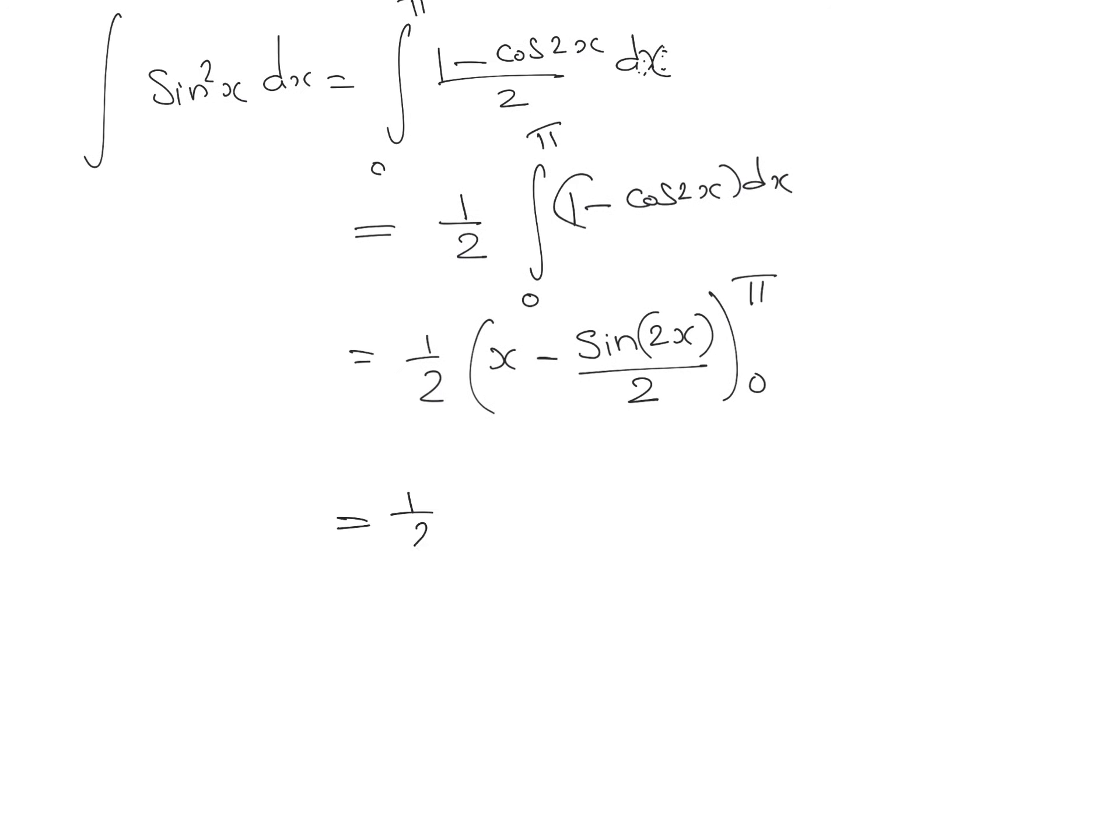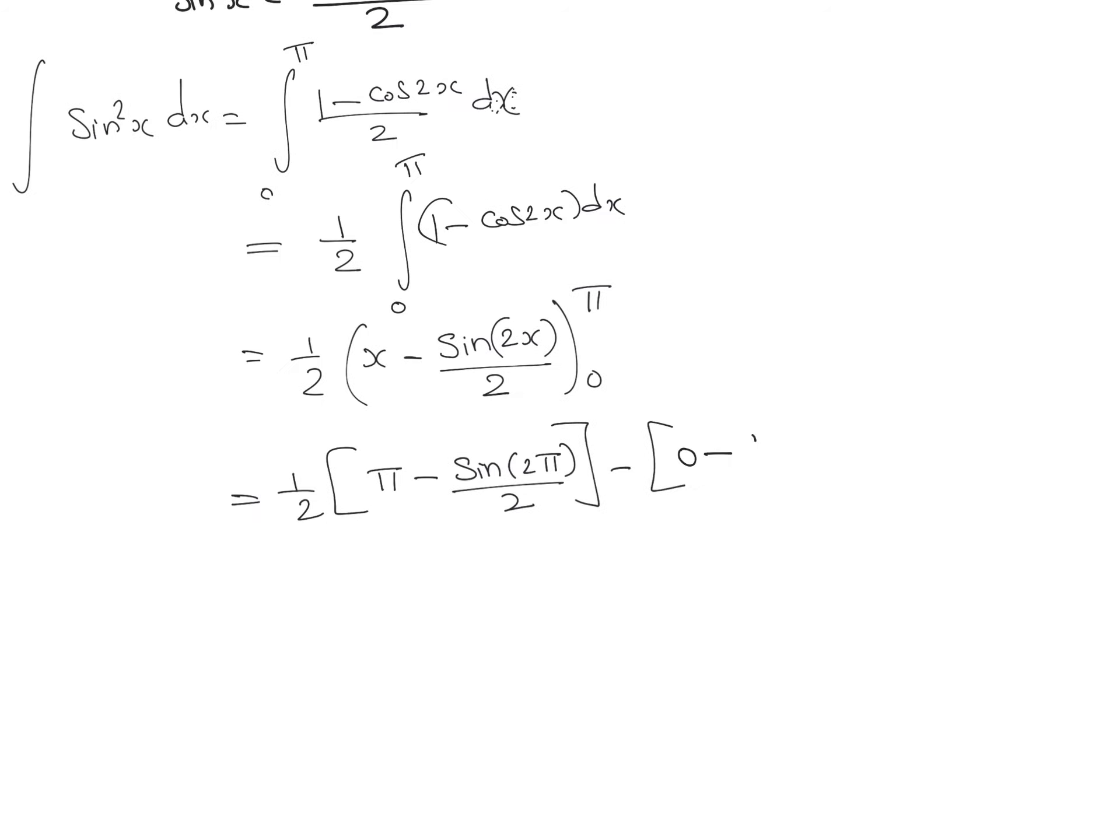Now first we can put the higher limit, that is π. Instead of x, we are putting π into the expression x - sin 2x divided by 2.